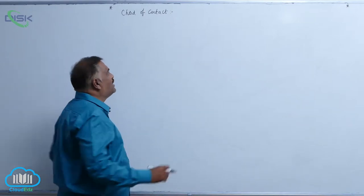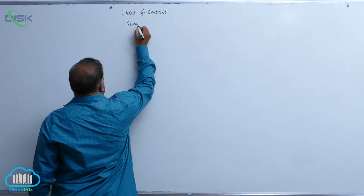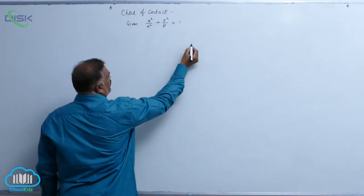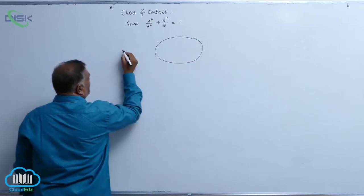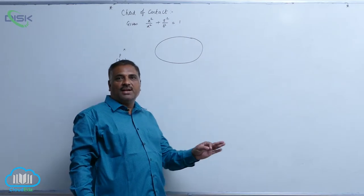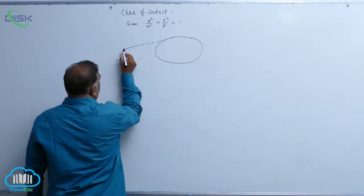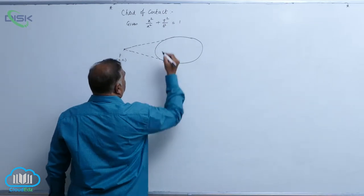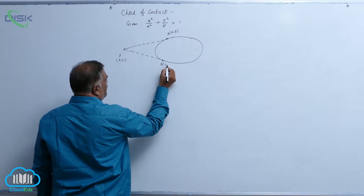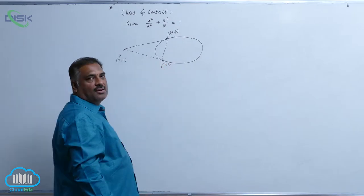We will discuss the chord of contact. Given ellipse is x² / a² + y² / b² = 1. If we take this ellipse and an external point P(x1, y1), we know that from an external point two tangents can be drawn to the given ellipse. Assume point A is (α, β) and point B is (γ, δ). The line joining these two points of contact is called the chord of contact.